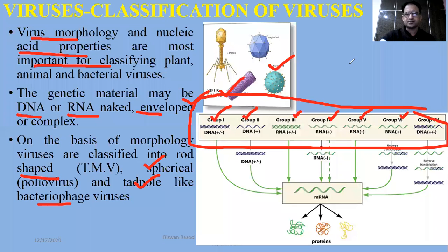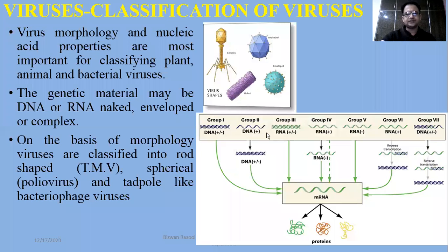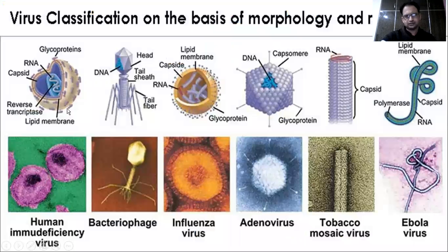In the PTB textbook, there is only a brief detail that viruses are classified as DNA and RNA viruses — single-stranded DNA and double-stranded DNA. For PTB purposes, you only need to remember that viruses can be DNA or RNA viruses. That was about the classification of viruses — different shapes and different bases can be observed.